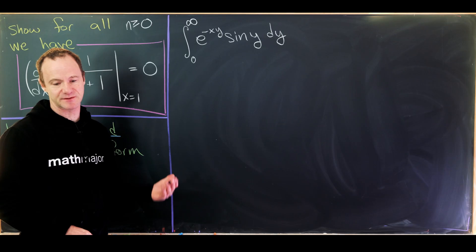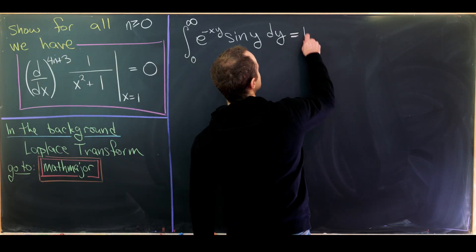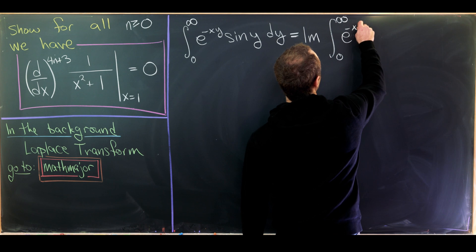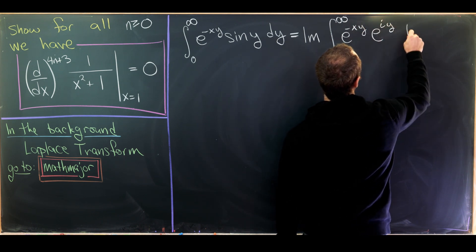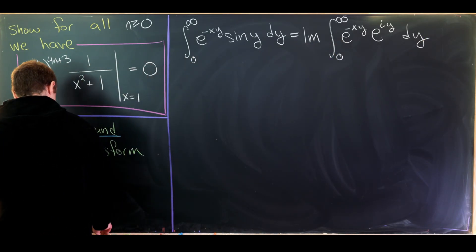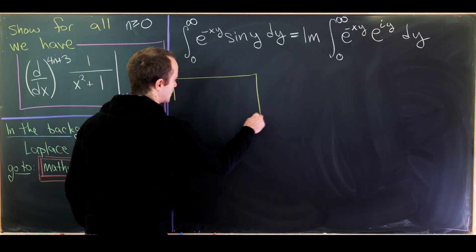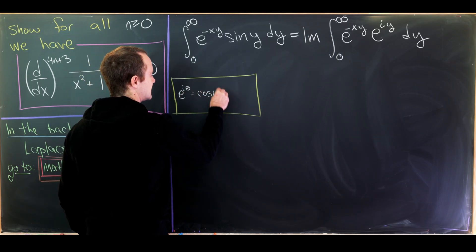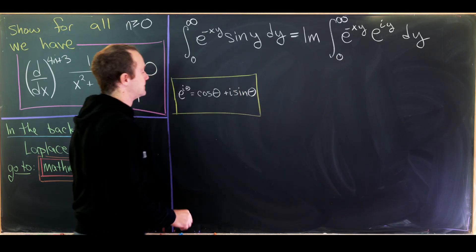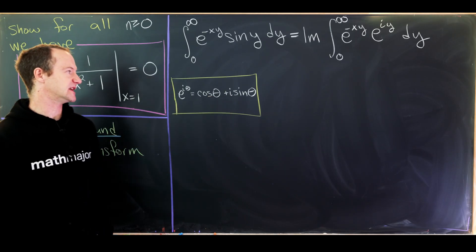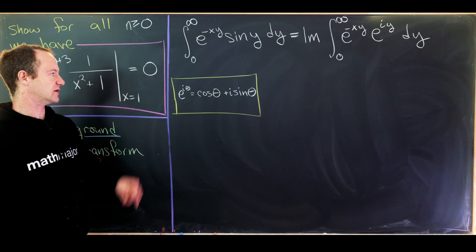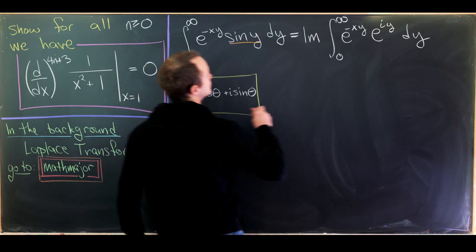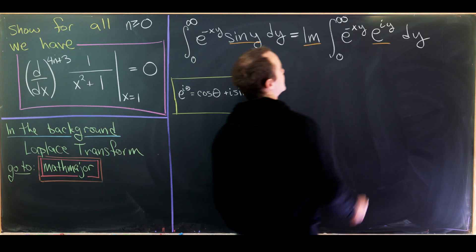I'm going to calculate this integral using complex functions. I can rewrite this as the imaginary part of the integral from zero to infinity of e^(-xy) times e^(iy) dy — using Euler's formula, which says e^(iθ) = cos θ + i sin θ. Extracting the imaginary part of e^(iθ) gives sin θ, so that's exactly what we did: we replaced sin(y) with the imaginary part of e^(iy).